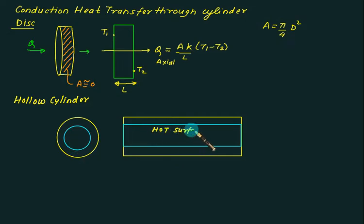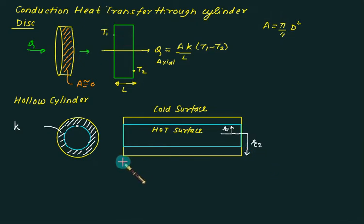Let's say we have hot surface inside, cold surface outside. r1 is the inner radius, r2 is the outer radius, and we have material in between with thermal conductivity k. Capital L this time is called length, not thickness.